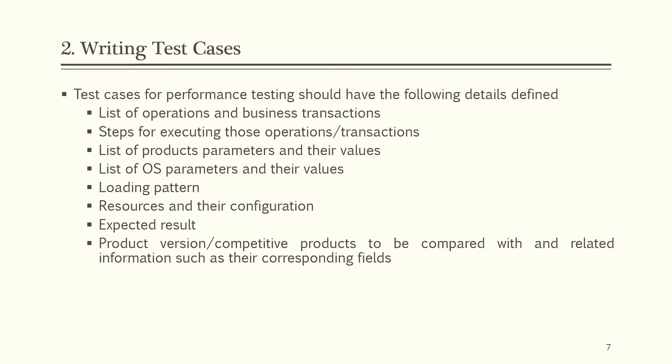The second point is writing test cases. Test cases for performance testing should have the following details defined: list of operations and business transactions to be performance tested, steps for executing those operations or transactions, list of product parameters and their values, list of operating system parameters and their values, loading patterns, resources and their configurations, expected results, product version or competitive products to be compared with, and related information such as their corresponding fields.